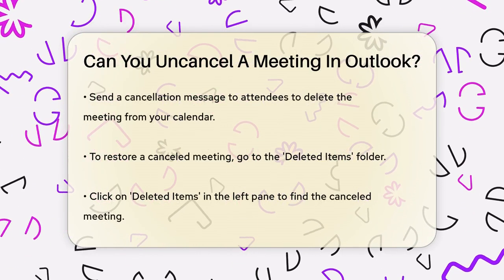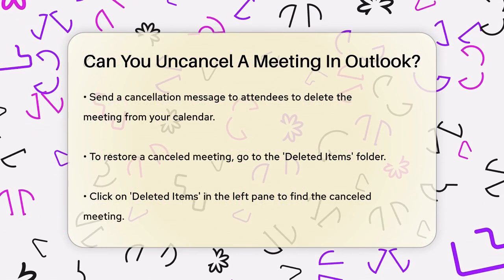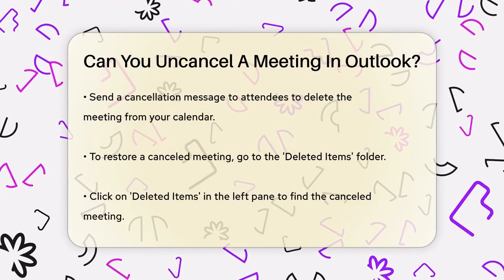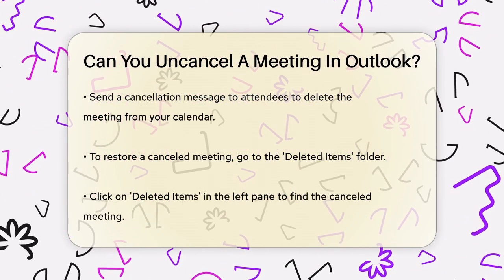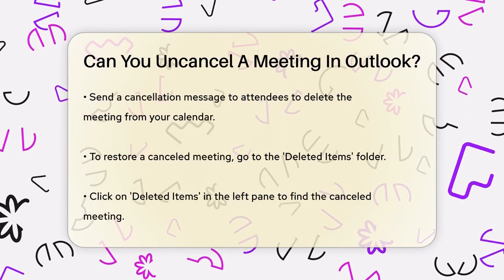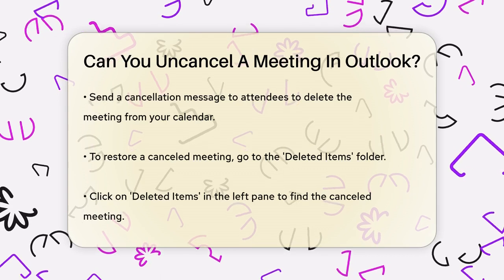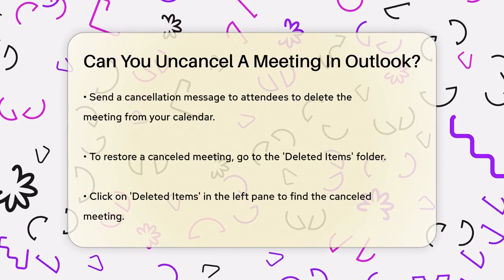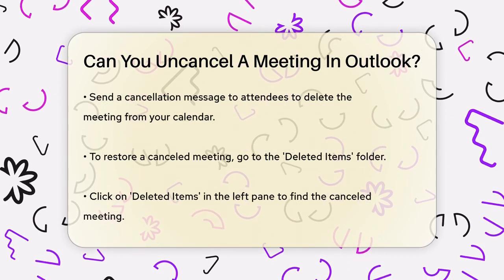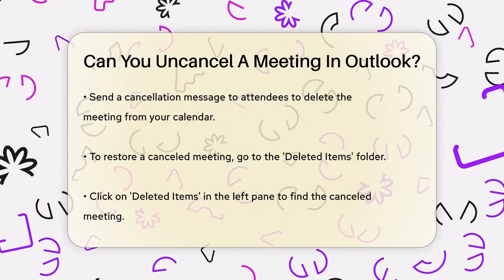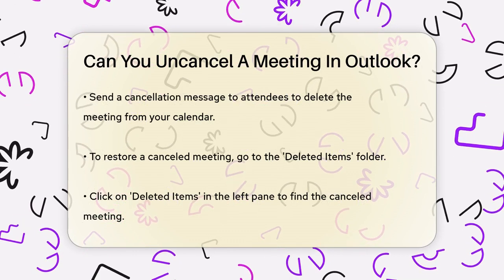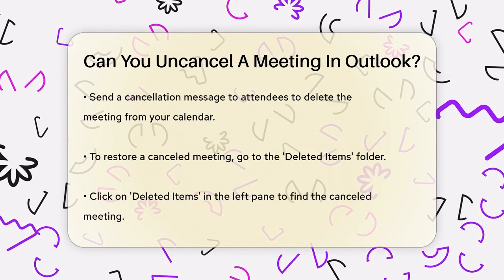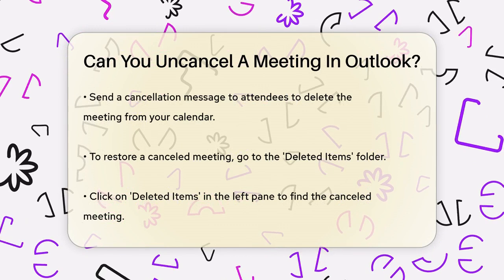Now, to restore a canceled meeting, you need to retrieve it from the Deleted Items folder. Here's how you do it: launch Outlook, click on the Deleted Items folder on the left pane, and then find the canceled meeting. You can either use the Recover Deleted Items from Server option,